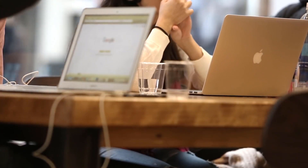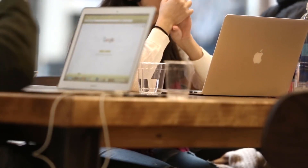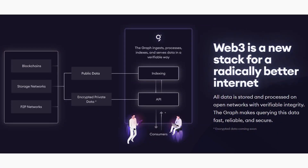The Graph has three key participants: Indexers, Curators, and Delegators. Indexers compete to provide the best service at the lowest price. Curators are individuals who organize data and signal which subgraphs are useful and accurate. Delegators are individuals who delegate stake to Indexers to contribute to securing the network without running a node themselves.